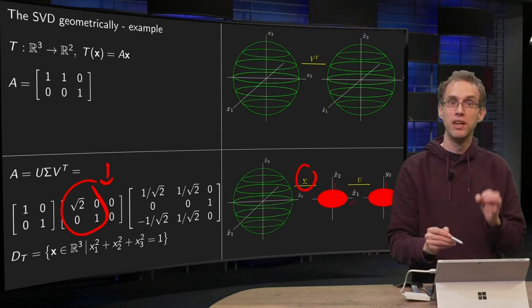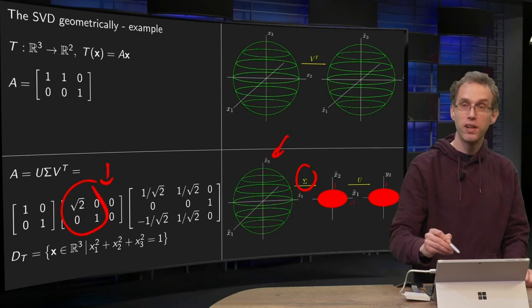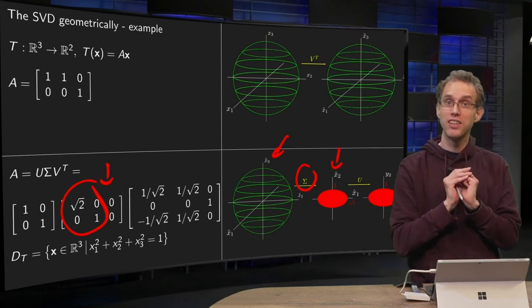So that is what Σ is doing. Σ is actually doing most of the action - we were at our unit sphere and due to Σ we now get the ellipse and all of its interior.